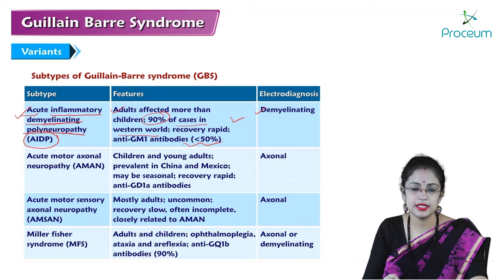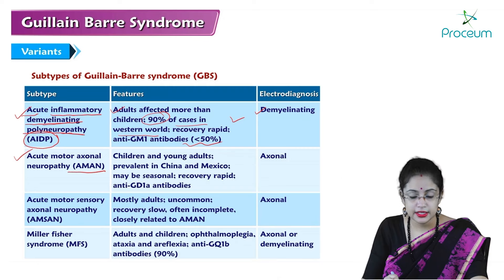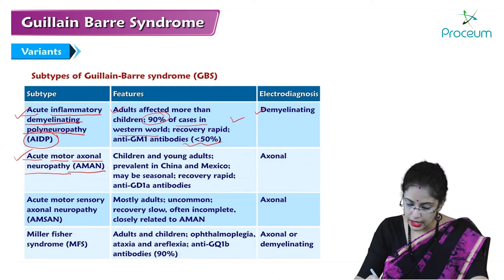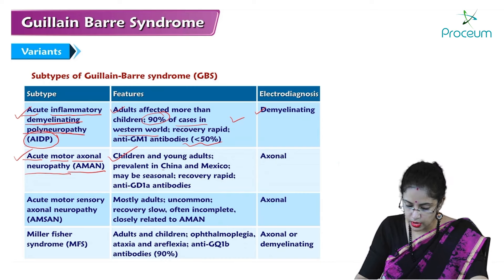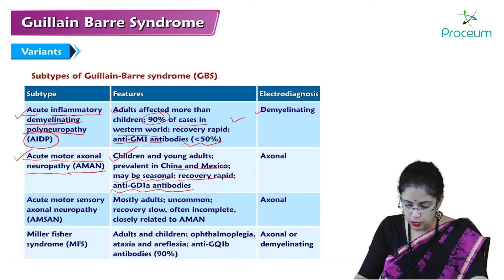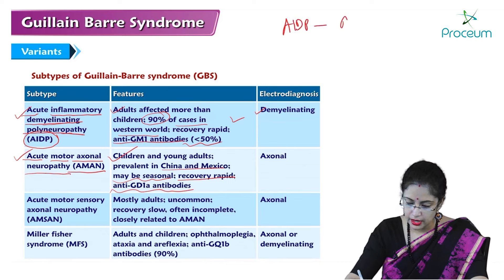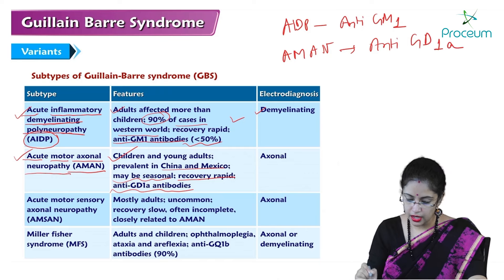The next subtype is AMAN, which stands for Acute Motor Axonal Neuropathy. It usually occurs in children and young adults. It is prevalent in China and Mexico and may be seasonal. Recovery is rapid. There is presence of anti-GD1A antibodies — whereas in AIDP the antibody is anti-GM1, in AMAN it is anti-GD1A.